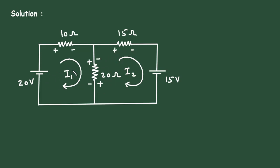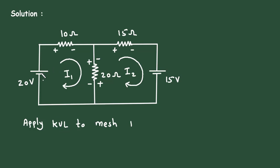Now let's apply KVL to mesh number 1. KVL stands for Kirchhoff's Voltage Law. Starting from this point: this will be minus 20, then plus 10 I1, plus 10 I1, then plus 20.